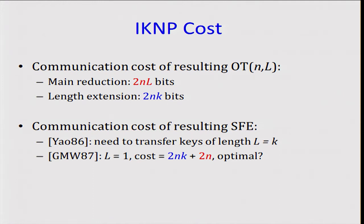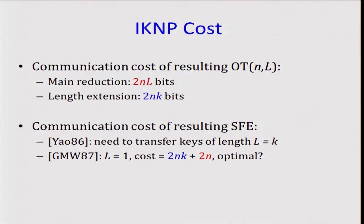In YAO, we need to transfer keys of length L equals K. So the main reduction and the length extension roughly are exactly equal. In GMW, we only need to transfer L equals 1, but in this case, somewhat surprisingly, the cost of the length extension is far more dominant than the cost of the main reduction. So this is the question. Maybe there's some hope for improvement here.